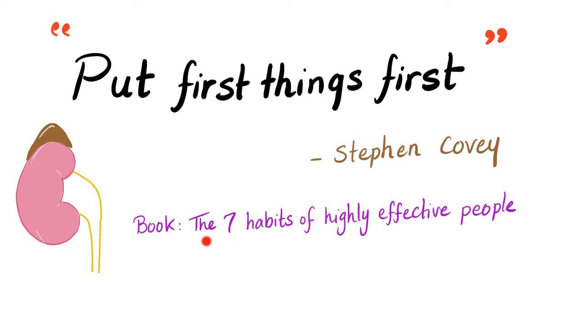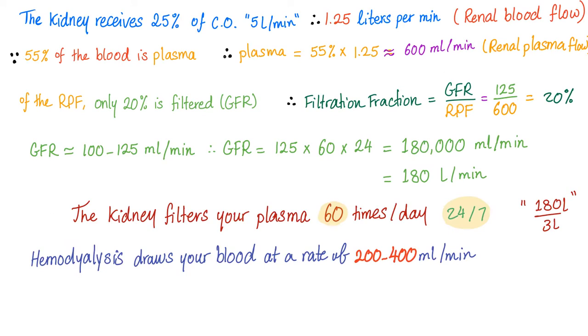In his book titled The 7 Habits of Highly Effective People, Stephen Covey said, successful people put first things first. And so does the kidney. So, let's start with renal blood flow.